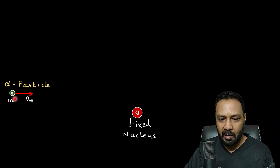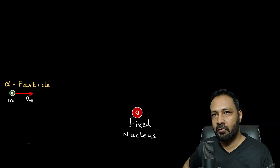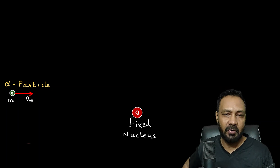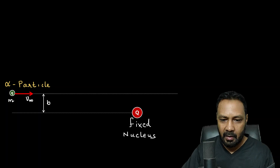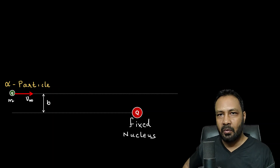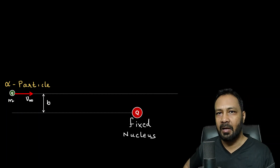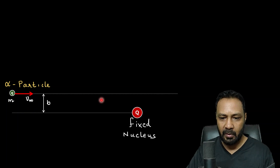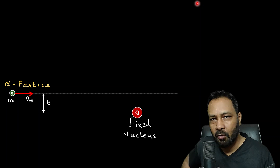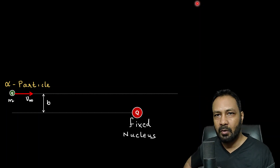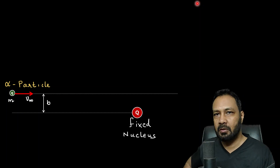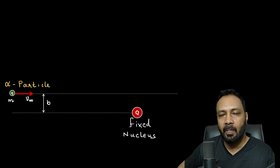The mass of the alpha particle is m, and it is projected with velocity v_infinity — I write v_infinity because the alpha particle is at a very large (effectively infinite) separation from the nucleus. The impact parameter b is the perpendicular distance from the fixed nucleus to the initial line of motion when projected from infinity. Because Coulomb repulsion is a conservative force, mechanical energy is conserved. And because it is central force motion, torque about the fixed nucleus is zero, so angular momentum is also conserved.